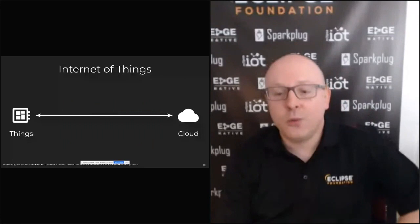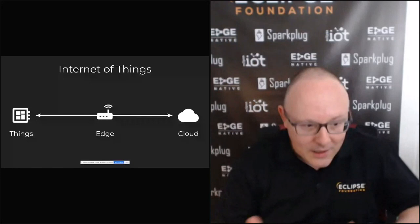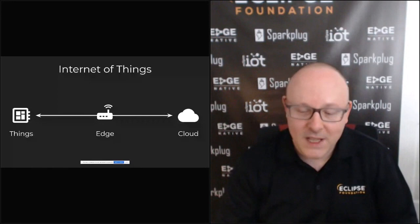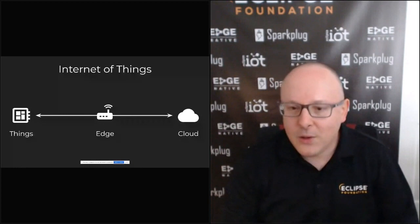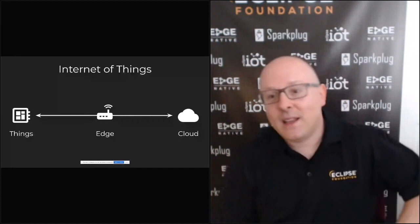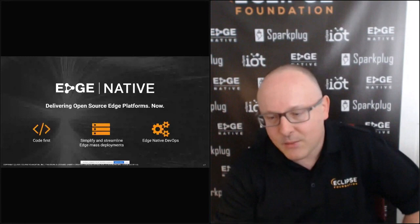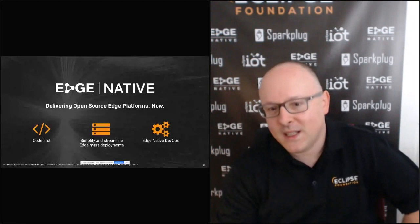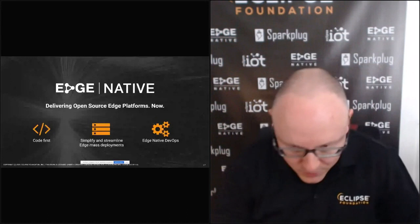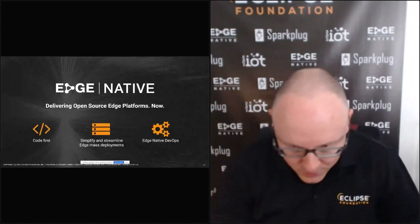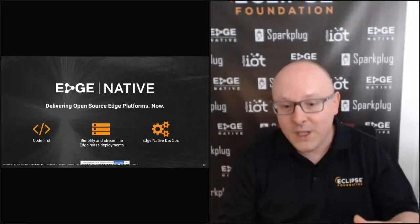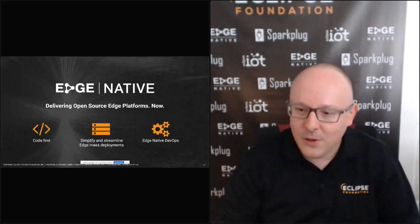The answer to that, obviously, is edge computing. You put edge nodes in the middle, bring storage and compute power closer to the source of the data, make more timely decisions, save bandwidth, reduce latency, and have a solution that is overall much more cost effective. That's why we launched the Eclipse Edge Native Working Group last December. The focus of this working group is not blueprints or proof of concepts, but real code you can use now to build edge computing solutions and do real-world production edge computing deployments. That's why we say our approach is code-first.